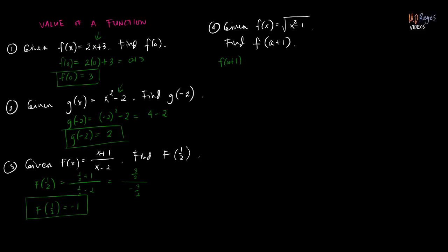So f of a plus 1 equals the square root of, substituting a plus 1 for x, that's the quantity a plus 1 squared minus 1. We have to simplify, so expanding a plus 1 quantity squared gives a squared plus 2a plus 1, and then minus 1. The plus 1 and minus 1 will not be eliminated from the expression yet.